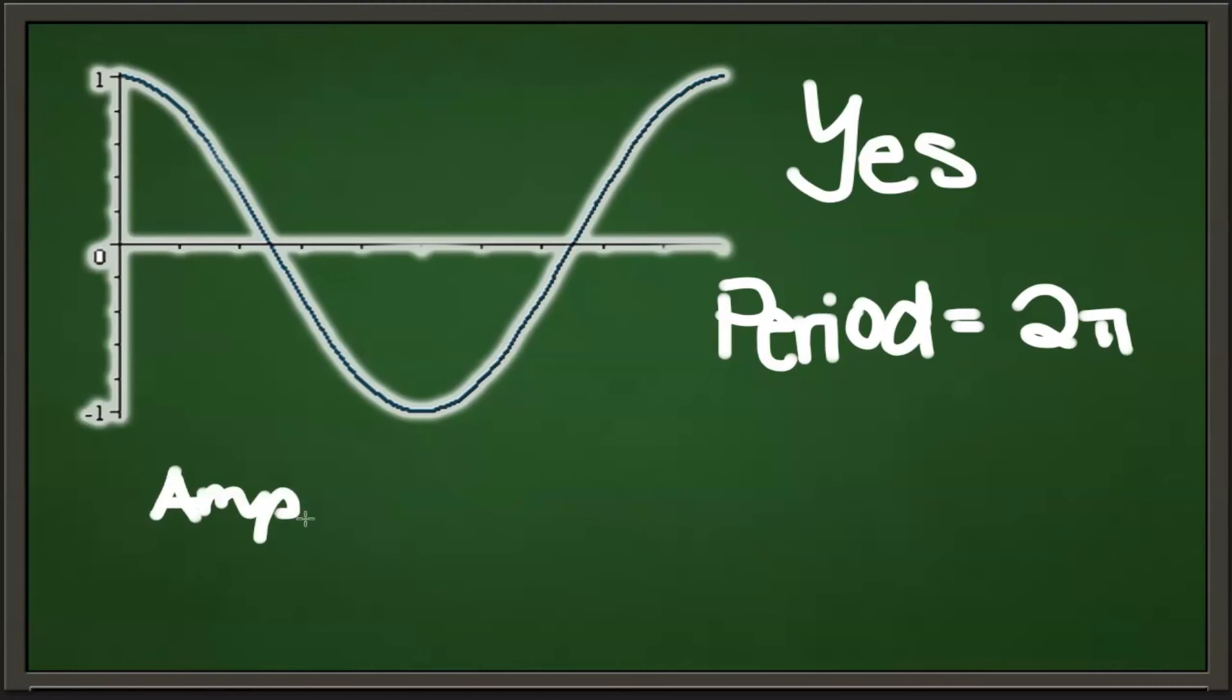Using the formula for amplitude (max - min)/2, we know 1 is the max and -1 is the minimum, so (1 - (-1))/2 equals 2/2 which equals 1.